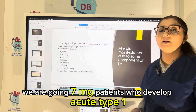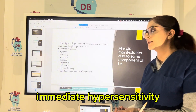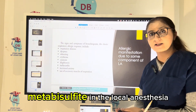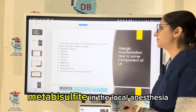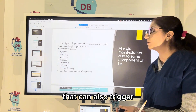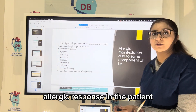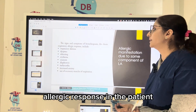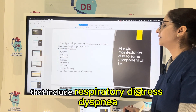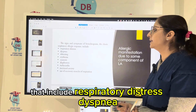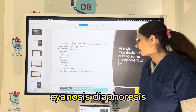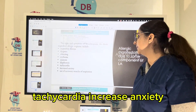Patients who develop an acute type 1 immediate hypersensitivity reaction — say due to sodium metabisulfite or methylparaben preservative in the local anesthetic — can also trigger an allergic response. The classic anaphylactic response includes respiratory distress, dyspnea, wheezing, arrhythmia, sinusitis, diaphoresis, tachycardia, and increased anxiety.